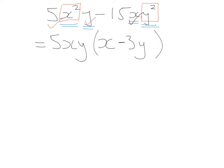To check the answer: 5xy × x = 5x²y, and 5xy × (−3y) = −15xy². So we know we have the correct answer: 5xy(x − 3y).